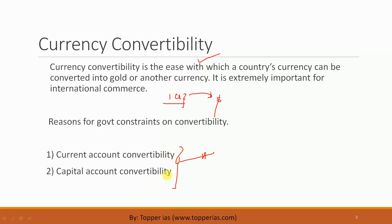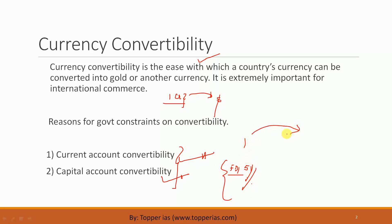Whereas in the capital account, it is partially convertible. Why is this partially convertible? For instance, a foreign country wants to make an FDI in one particular sector which allows for 51% FDI. In this case, this particular limit is what the government will allow as fully convertible. However, if an Indian wants to invest in some foreign country, that investment has a check upon it — beyond a certain limit, the money to be invested in a foreign country by an Indian is not allowed to be fully convertible.